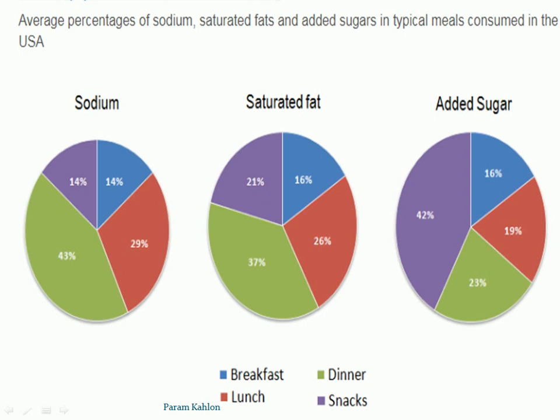During snacks time, sugar is consumed more as compared to the other nutrients — sodium and saturated fat at 14% and 21% — while sugar consumption is 42%, which is double the amount consumed in snacks for those other nutrients.